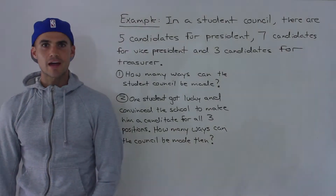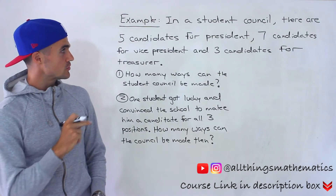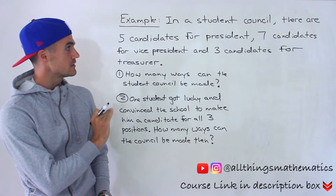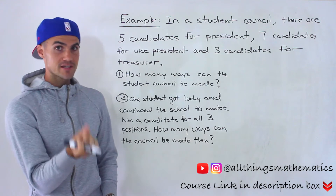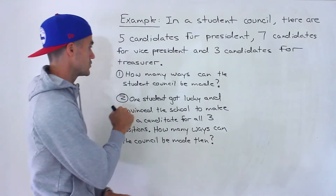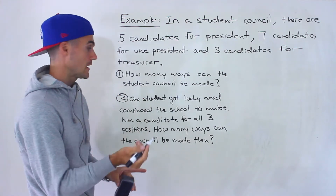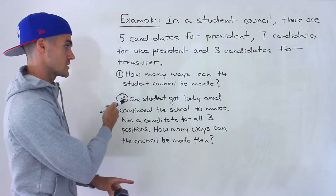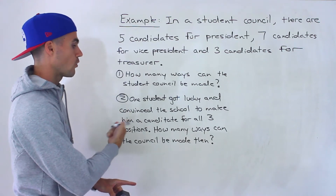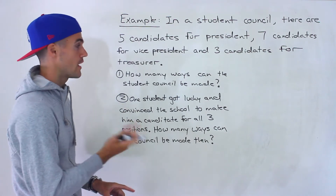Welcome back. Patrick here, and in this next counting question we're told that in a student council there are five candidates for president, seven candidates for vice president, and three candidates for treasurer. We've got two questions: number one, how many ways can the student council be made? And number two, one student got lucky and convinced the school to make him a candidate for all three positions — how many ways can the council be made then?